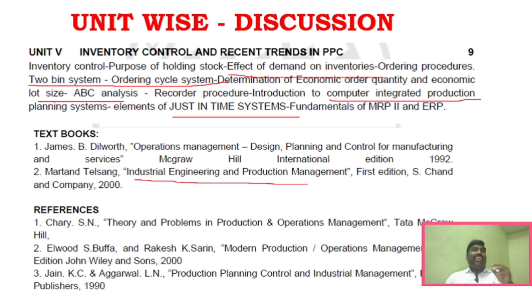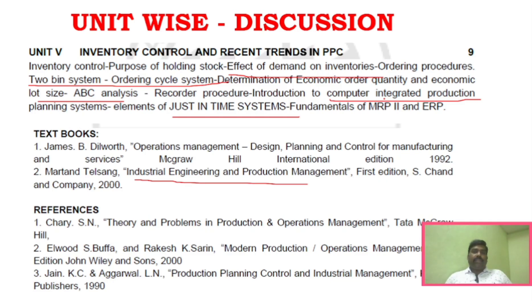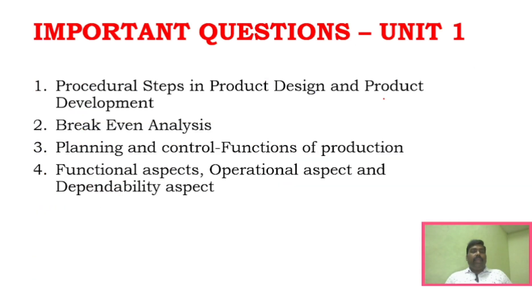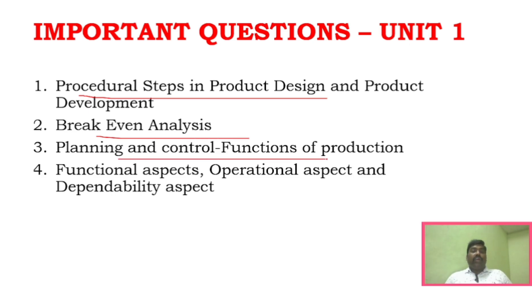Now for Part B important questions: Unit 1 includes procedural steps in product design and product development, break-even analysis, and planning and control functions of production covering functional aspect, operational aspect, and dependability aspect. The syllabus is very vast. Unit 2 covers work measurement, micro motion study, memo motion study, and worker study implementation and pre-determined motion time standards.